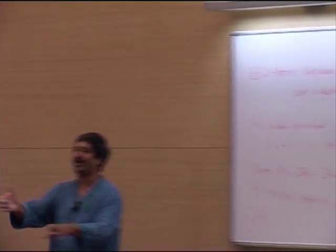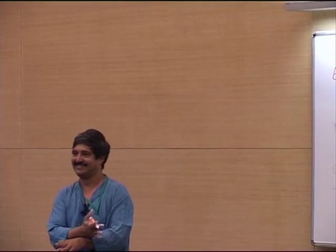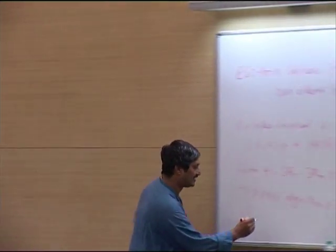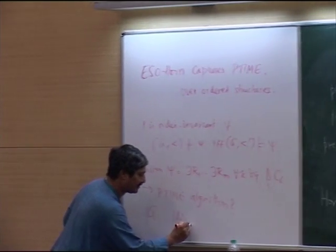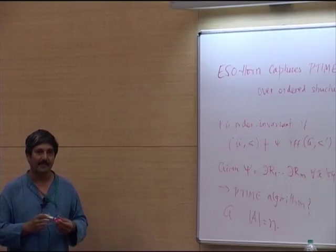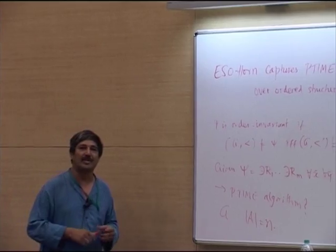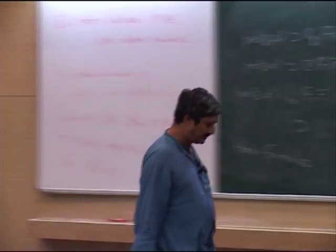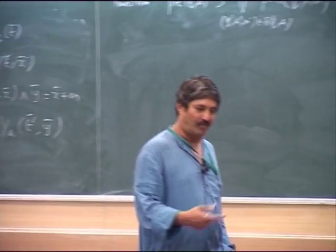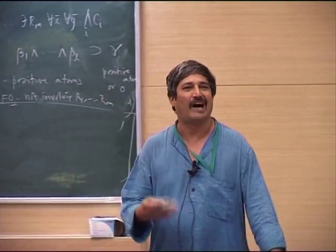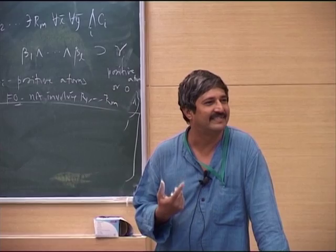The machine is going to look at the structure and check whether it satisfies the sentence or not. The structure has, say, N elements in the domain. What should the machine do? Any idea how we could use horn satisfiability?